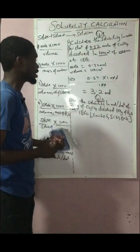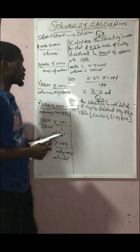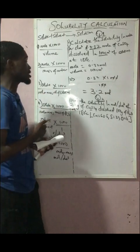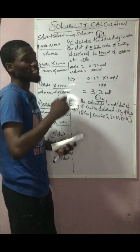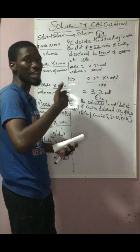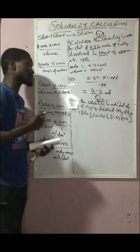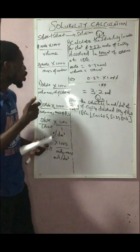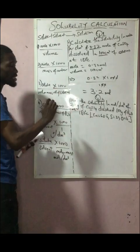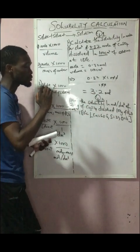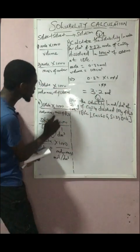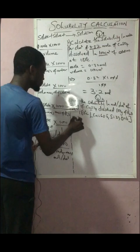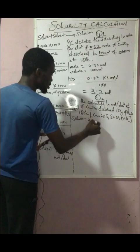This question on the board is a JAM question — I repeat, it was a JAM question. The question: calculate the solubility in mol per dm³. In JAM they will always state whether they want the answer in gram per dm³ or mol per dm³. So: solubility in mol per dm³ of 2.0 grams of copper sulfate, and it is stated clearly that 100 grams of water is given — that is, the mass of water is 100 grams. So the solute is 2.0 grams.